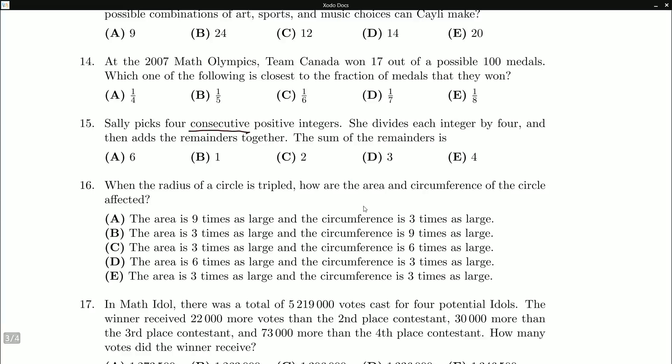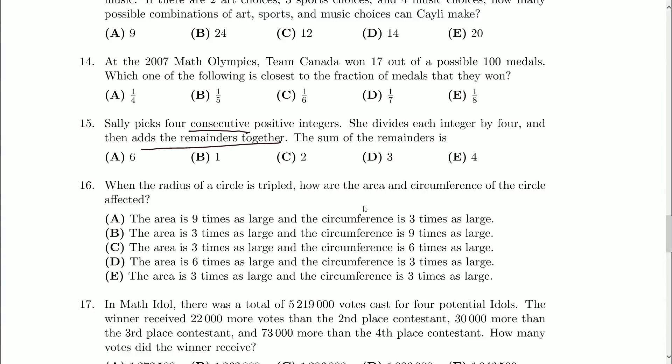So what were we told to do in the question? We divide each integer by four and add the remainders together. Well, one of those remainders will be zero, one of them will be one, one of them will be two, one of them will be three. So we can just add those all up.